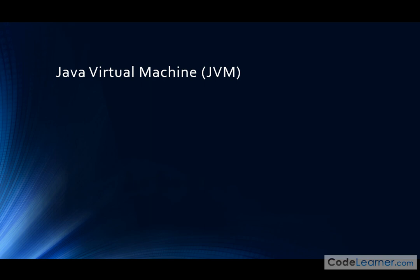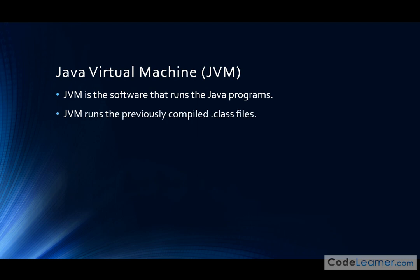The first thing is something we've already talked about in a previous lesson: the Java virtual machine. Java virtual machine is the software that runs Java programs. When you compile a Java program and try to run it, you have to have this Java virtual machine on your computer. It looks at the class file created during the compile process, goes line by line, interprets the bytecode, and then executes the results. This JVM is available for all major operating systems, which allows you to distribute class files and have them run everywhere.